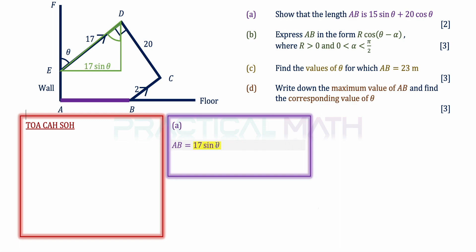So AB starts as 17 sin theta, but there is still a remaining part of AB. Drawing a second right angle triangle in blue, with DC = 20 as the hypotenuse. Since the angle at one corner is theta and the other is 90 degrees, the remaining angle is 90 minus theta, or pi over 2 minus theta, making the angle at the other vertex theta. The side parallel to the floor is adjacent over hypotenuse, giving 20 cos theta.